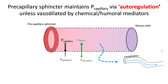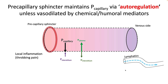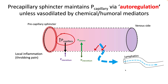The pre-capillary sphincter is really important in maintaining peak capillary pressure by autoregulation. If you have high blood pressure, your pre-capillary sphincter will constrict, thereby maintaining capillary pressures. In cases of local inflammation, your pre-capillary sphincter loses its autoregulation capacity, resulting in increased capillary pressures. Inflammation also causes your membranes to become more leaky, therefore increasing the amount of fluid filtered out of the capillaries.